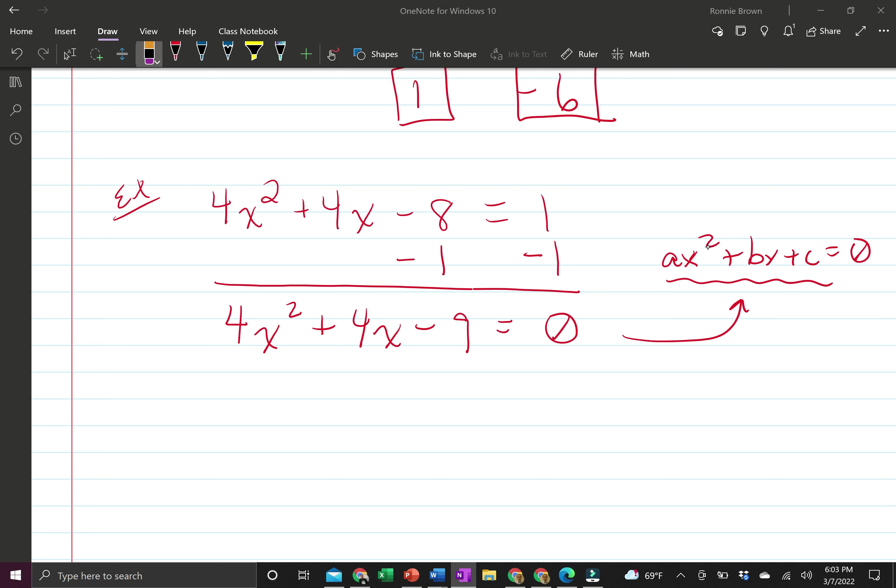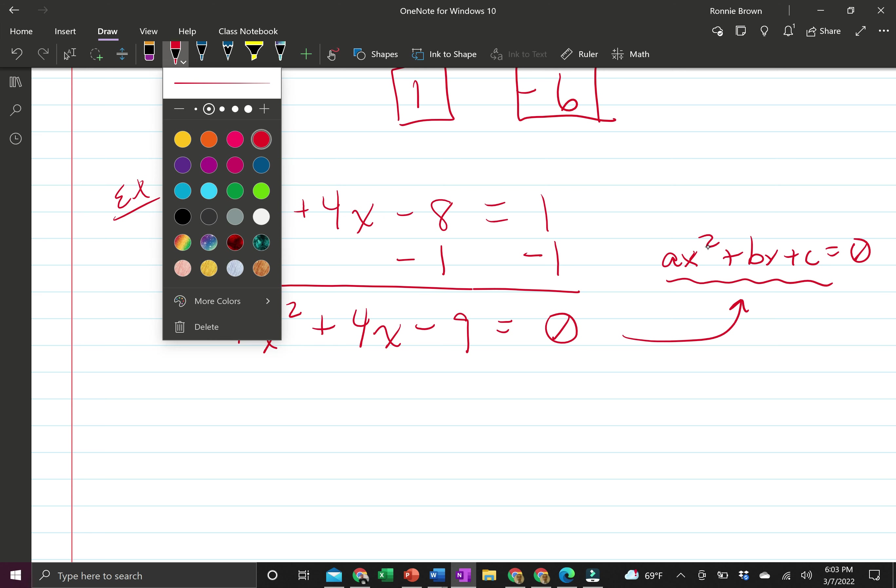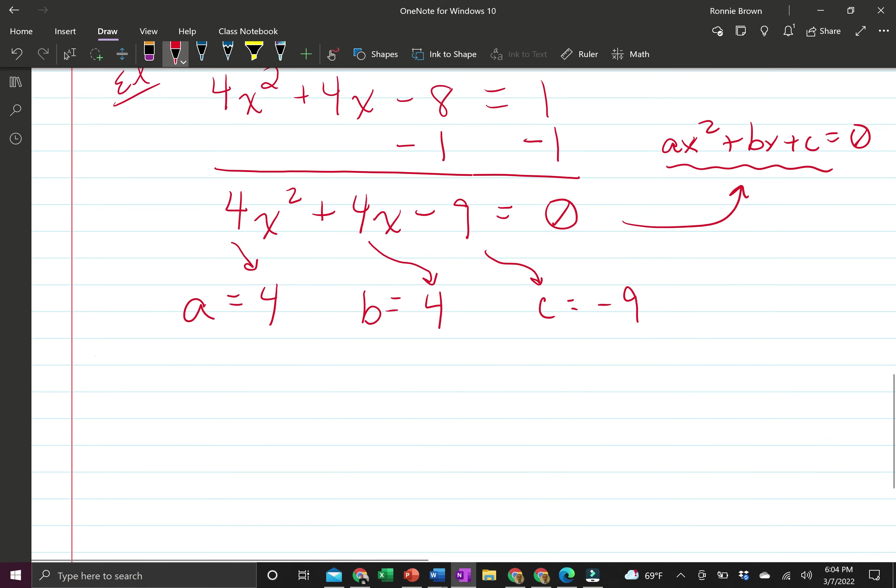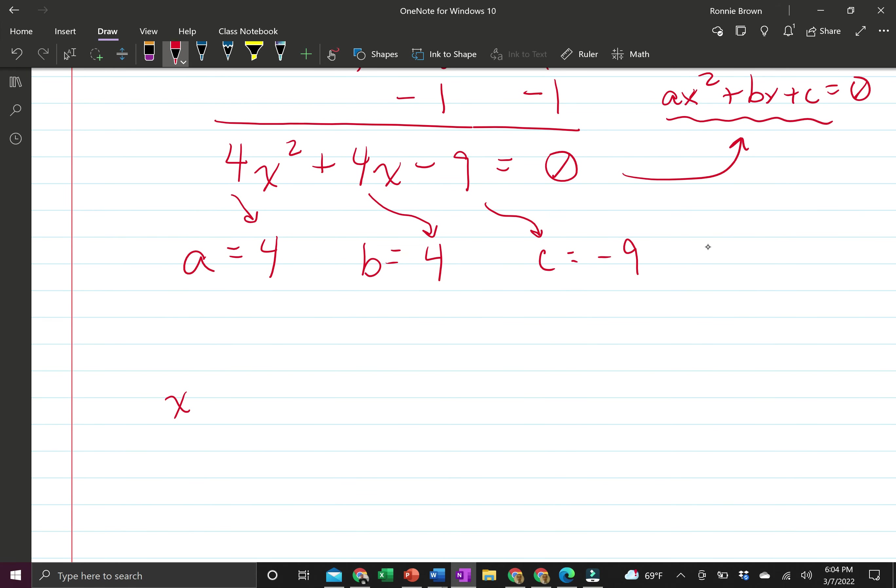Everything is on one side, 0 is on the other side. In identifying our a, b, and c, our a value is 4, the value right in front of the x squared. Our b value is positive 4, the number in front of the variable x. And the c value is negative 9, that constant that's over there by itself. So at this point, we have our a, b, and c values. We can go ahead and plug into the quadratic formula. Substituting in, b is 4, a is 4, c is negative 9, and a in the denominator is 4.